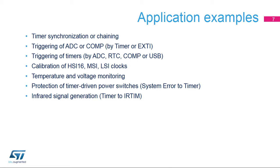The Interconnect Matrix is mostly used for synchronizing or chaining timers — for example, allowing a master timer to reset or trigger a second slave timer, triggering an ADC or comparator through a timer event or an external interrupt, triggering a timer through an ADC when a predefined threshold value is crossed by the analog input. Timers can also be triggered by DFSDM short-circuit detection or by a real-time clock interrupt at a given time or at a regular interval.